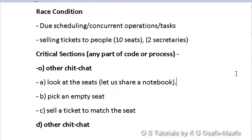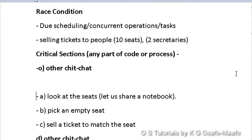This happens in real life too — for example, in admissions, two or three officers traveling the country could each offer admissions to ten students even though only ten slots are available. If nothing prevents them from offering admissions at the same time, you create a race condition. We solve it by identifying the critical section: the part of code or process that must not be shared, or must be treated very carefully to avoid issues.